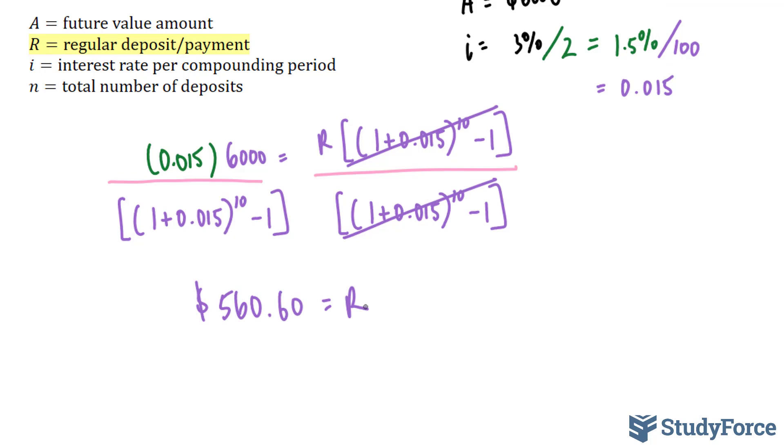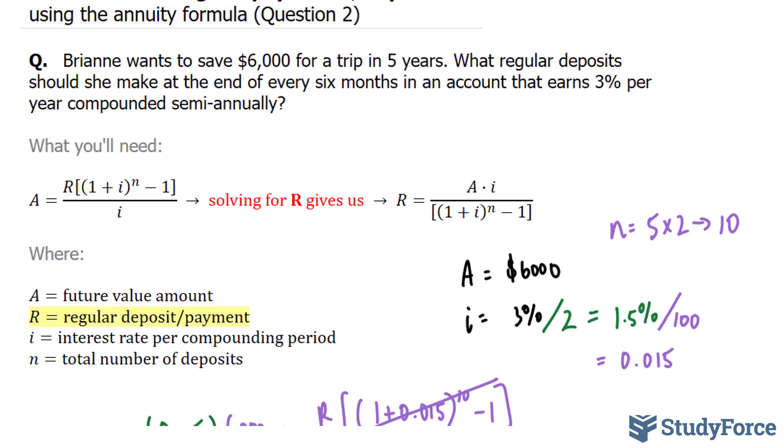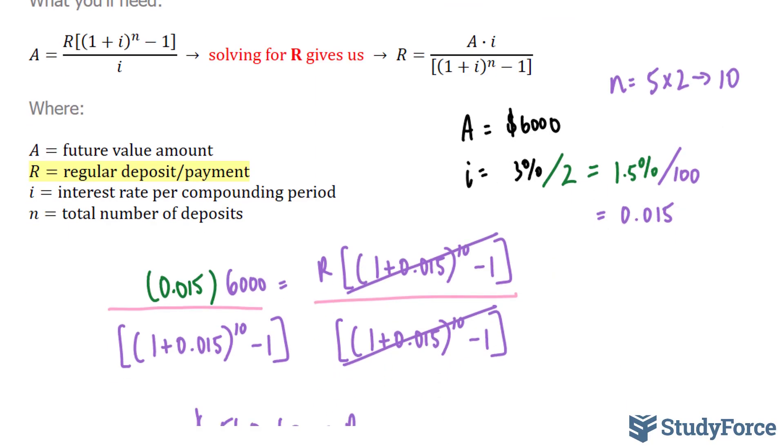So what does this tell us? This tells us that in order for Breanne to save $6,000 for a trip in five years, she has to deposit regularly, every six months, $560 and, of course, $0.60.